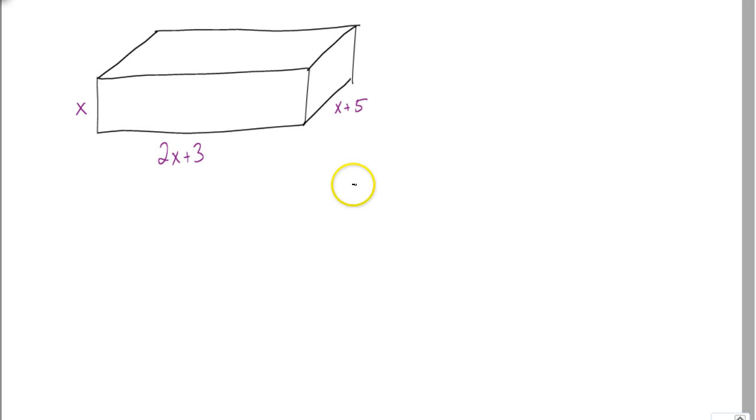Now, we know that we can multiply the dimensions together to get x times 2x plus 3 times x plus 5. But if the problem asks us to write our answer in standard form, this is not in standard form. To get this in standard form, we want to multiply all three of these together.